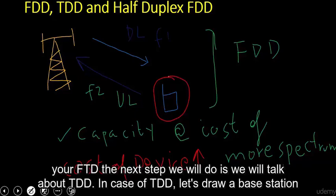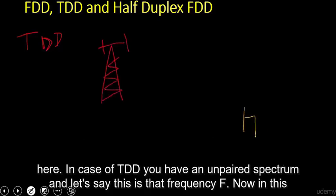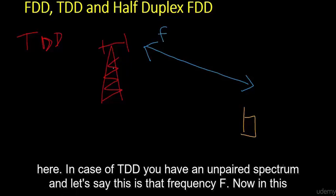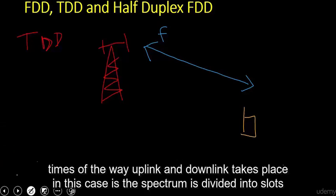Now let's talk about TDD. In the case of TDD, you have an unpaired spectrum at a single frequency f. In this unpaired spectrum, you can have both uplink and downlink on the same spectrum but at different times.